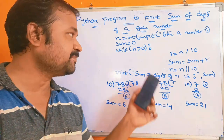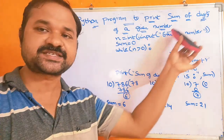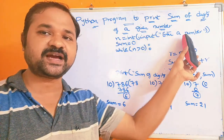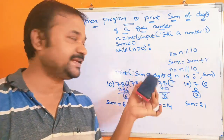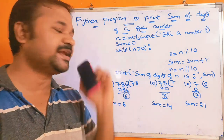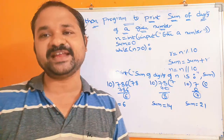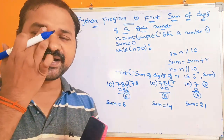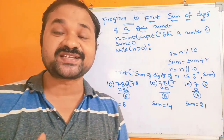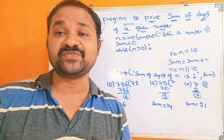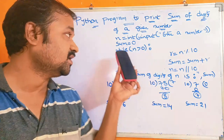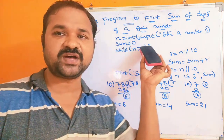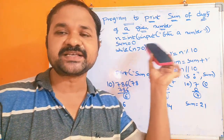Let the number be 786. Now 786 will be converted into an integer, so n contains 786. In order to calculate the sum of the digits of the given number, we have taken the initial value of sum as 0.